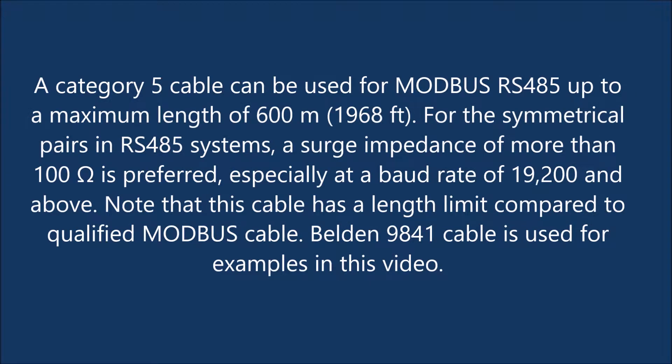A category 5 cable can be used for Modbus RS-485 up to a maximum length of 600 meters (1,968 feet). For the symmetrical pairs in RS-485 systems, a surge impedance of more than 100 ohms is preferred, especially at a baud rate of 19,200 and above. Note that this cable has a length limit compared to qualified Modbus cable.